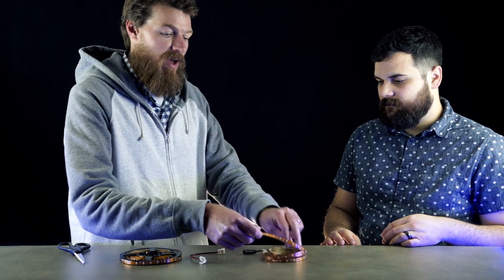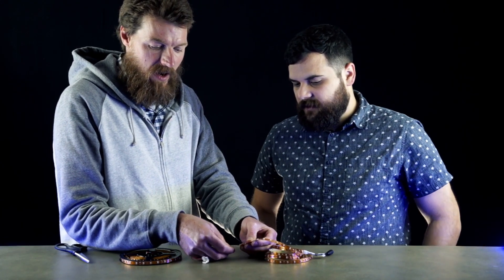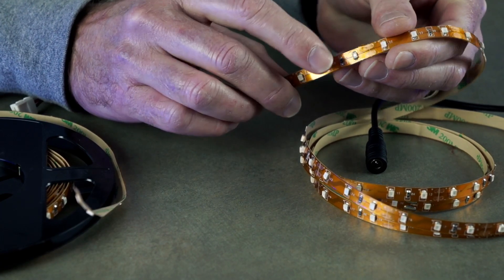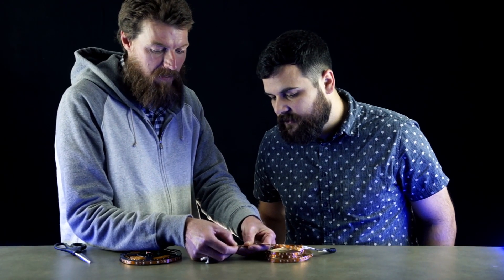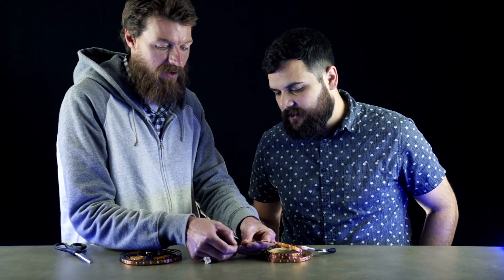We have a few different types of light strip. This is the Luma 5 indoor version. Every two to four inches, depending on which light strip you have, there will be a cut mark. There's gonna be some little copper pads and they'll have a little line right down the center of them, and that's where you're gonna make your cut.